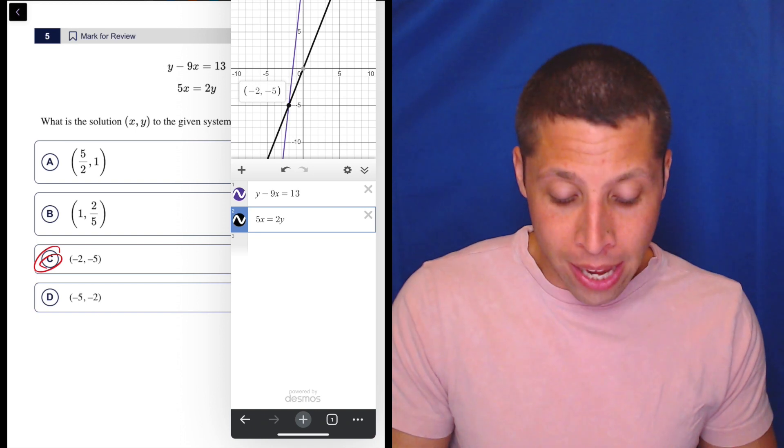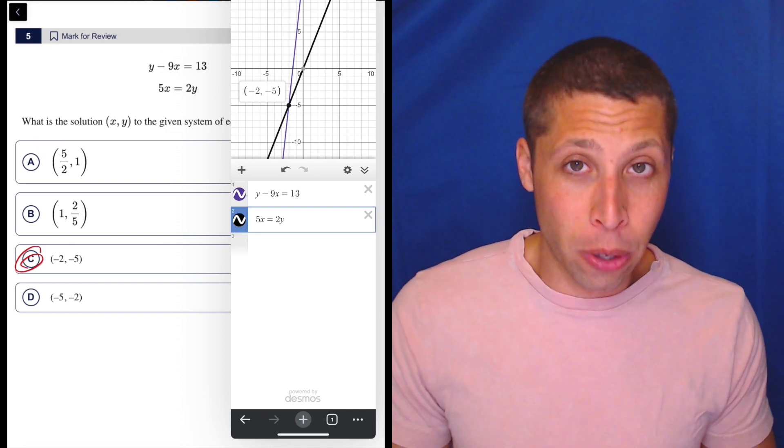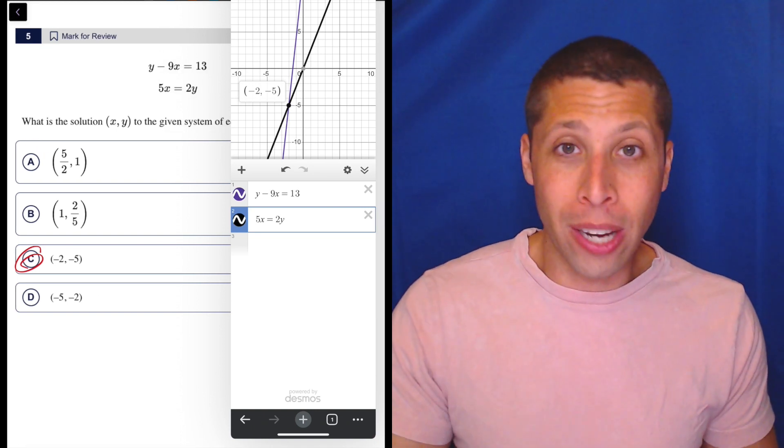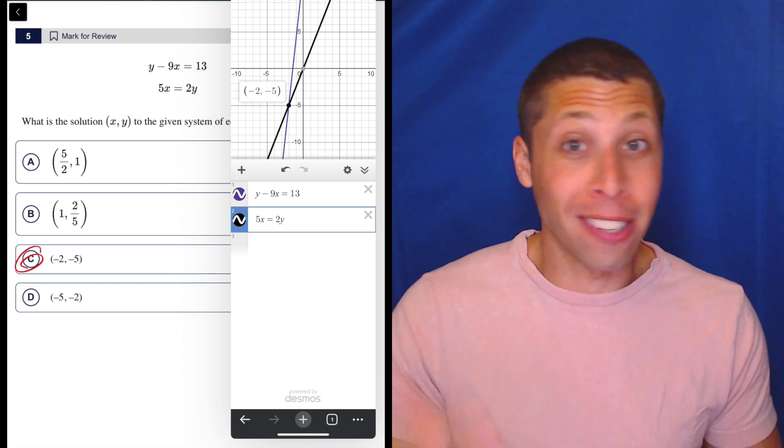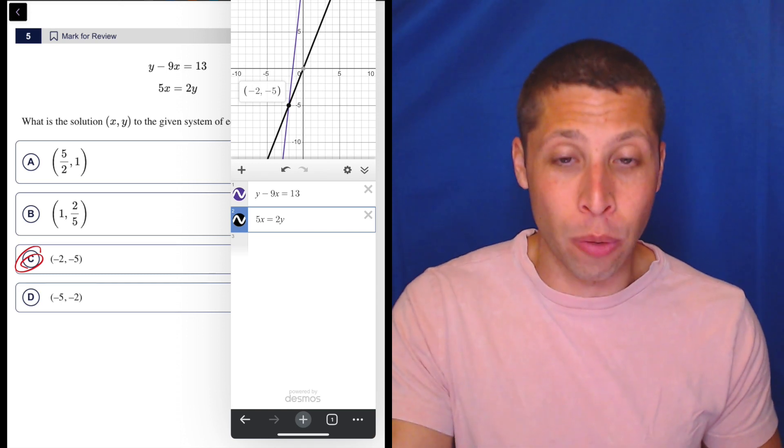The other thing too is that occasionally when we have point of intersection questions, one of the equations will be just like y equals five. If that's the case, then yeah, don't use Desmos, just go right into it.